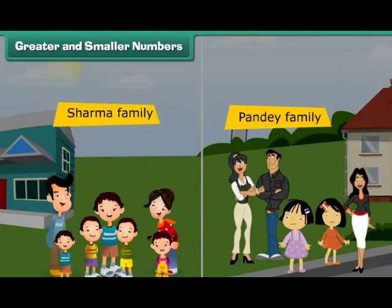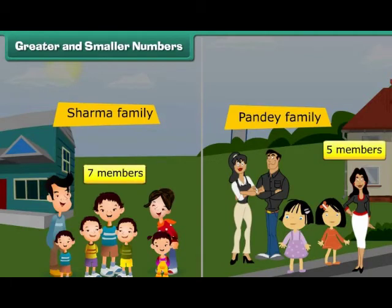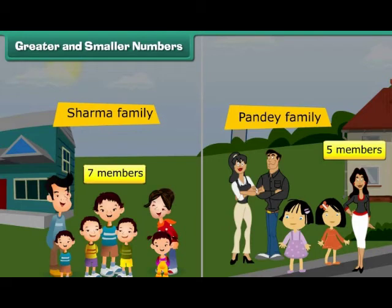Greater and smaller numbers. Recall the Sharma family with 7 and Pandey family with 5 members. Sharma family has more members, which means 7 is a greater number than 5. Therefore, we can say that numbers that come later are greater than the numbers that come before.